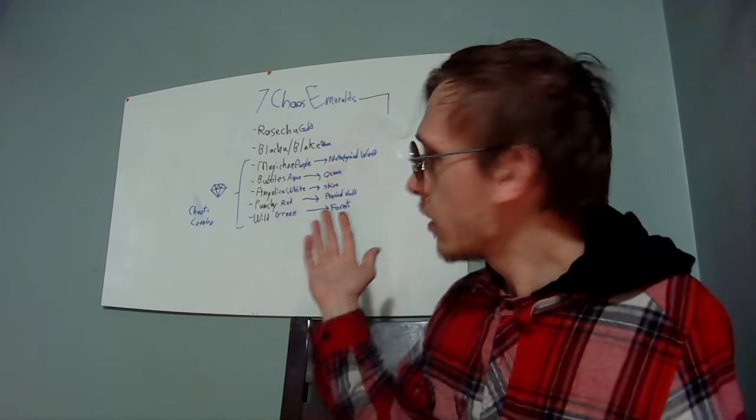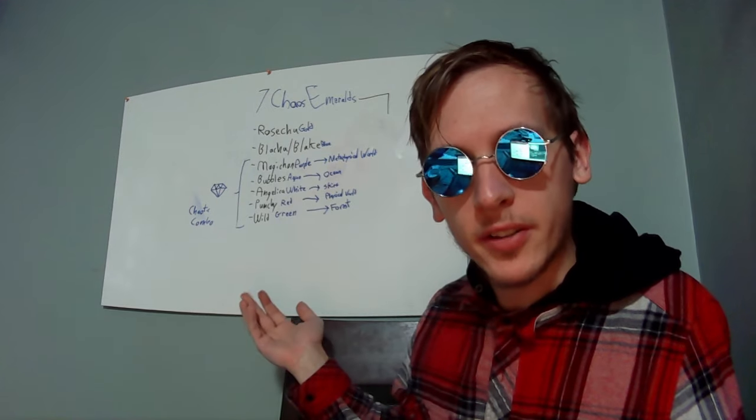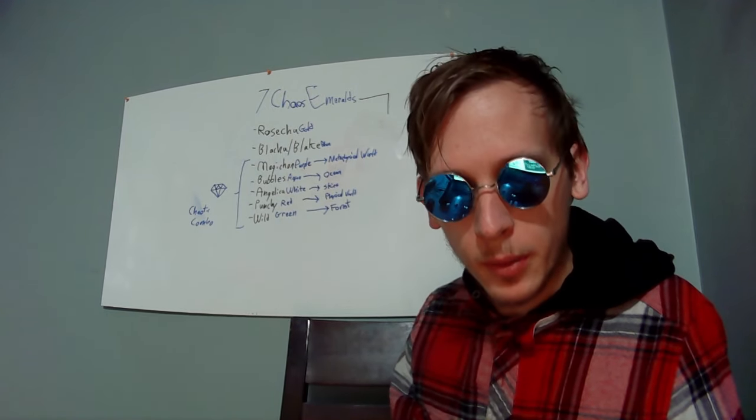I mean, on first glance, those are pretty much all the aspects of the world. What do Rosechu and Blake represent?